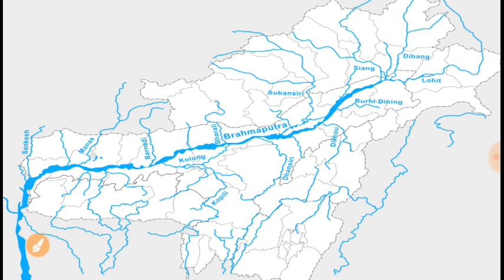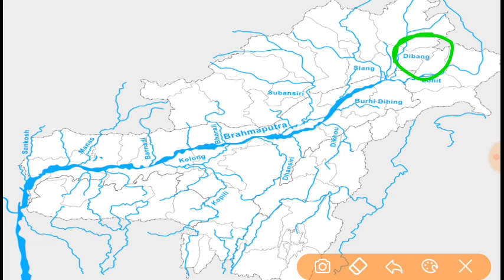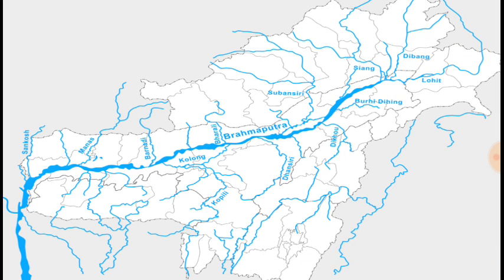Important tributaries — the Subansiri is an entry. The name of the tributaries — low hit tributaries. The tributaries are giant. The Brahmaputra tributaries.